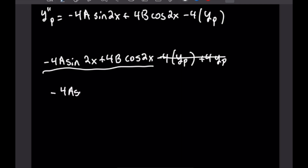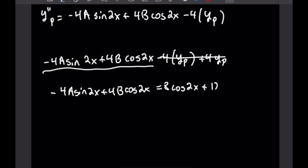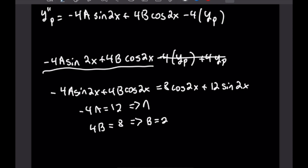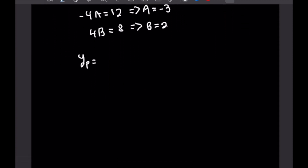So -4A·sin(2x) + 4B·cos(2x) = 8cos(2x) + 12sin(2x). Matching coefficients gives -4A = 12 and 4B = 8, meaning A = -3 and B = 2. The final particular solution is Y_p = -x(3cos(2x) - 2sin(2x)). That finishes off the problems without an exponential in front of the trig functions.